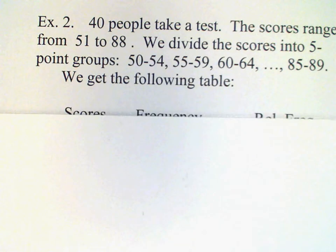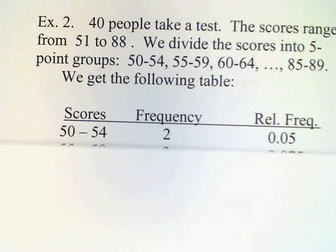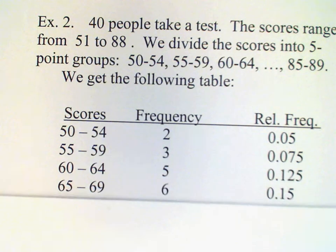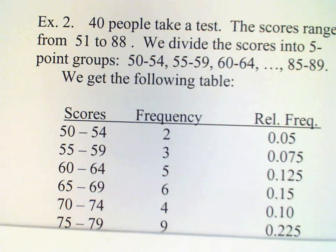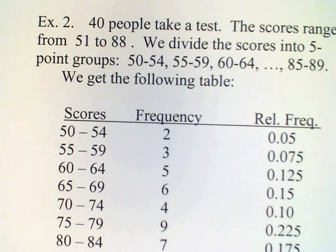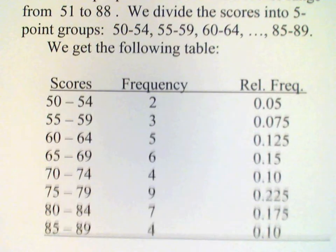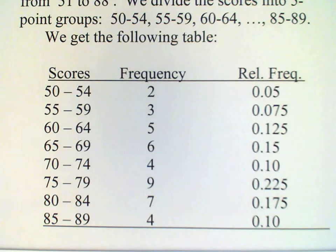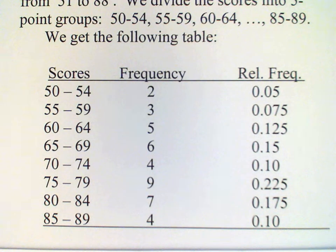And after we do that, then the data set looks a lot more manageable. We only have eight classes here of scores: 50 to 54, 55 through 59, and so on.